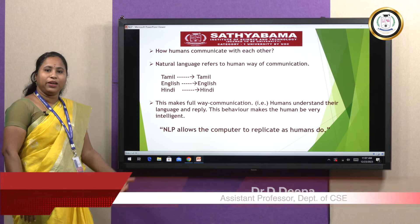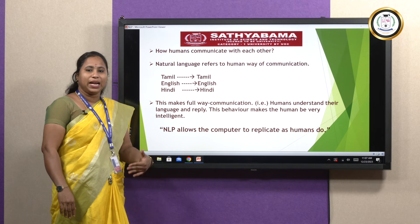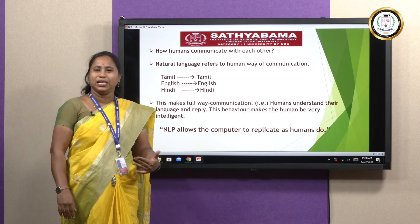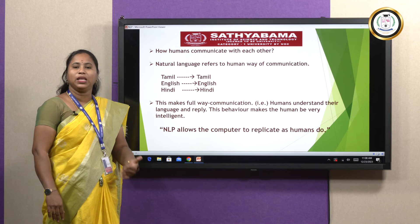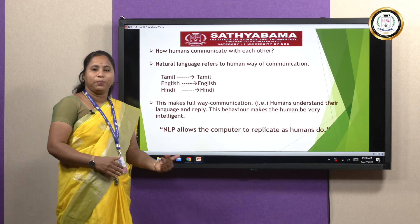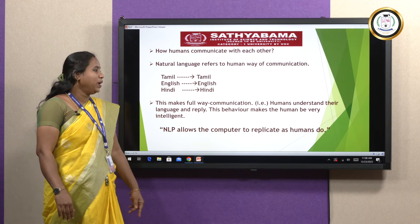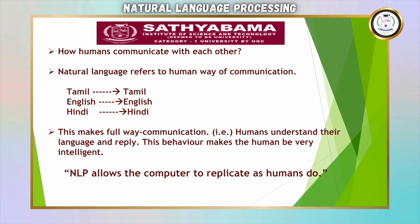For example, Tamil people will communicate with Tamil people, English members will talk with English, and Hindi people will talk with Hindi. Humans can understand their own natural language — that is a full two-way communication where, according to the language they speak, the other people will reply. Humans understand their language and reply, and this makes human beings special and intelligent.